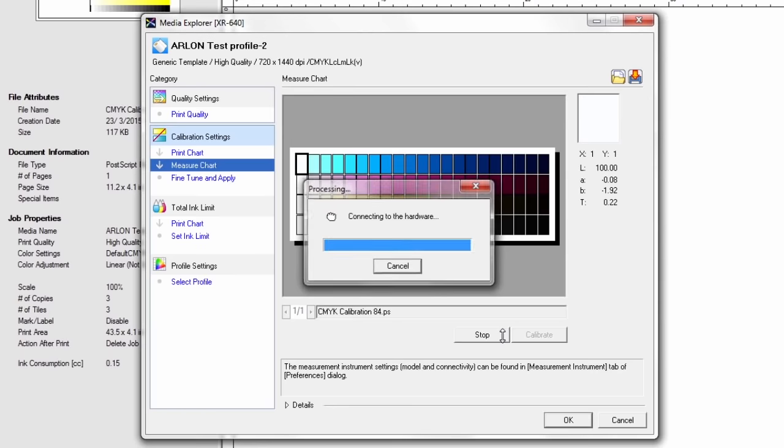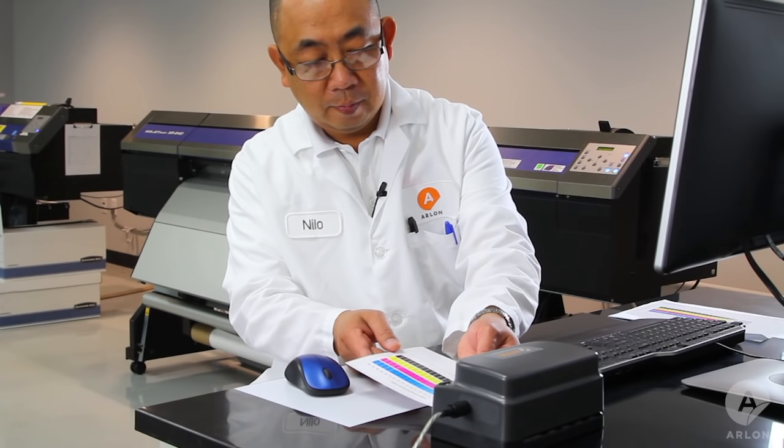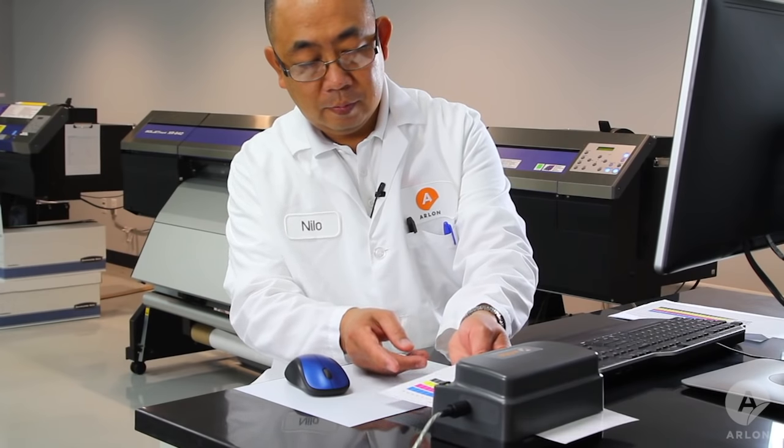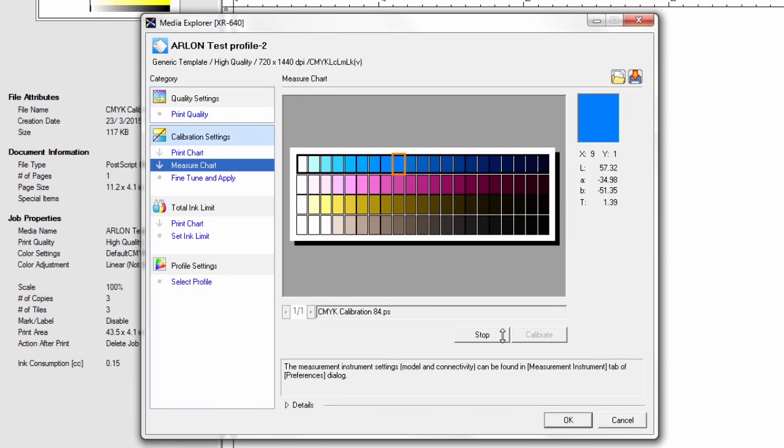Then read your printed calibration chart. As the measurements scan each individual color, you will see VersaWorks acquiring the linearization data.